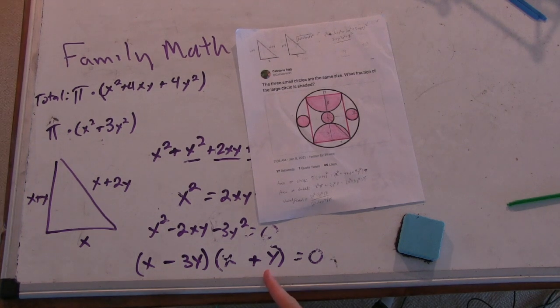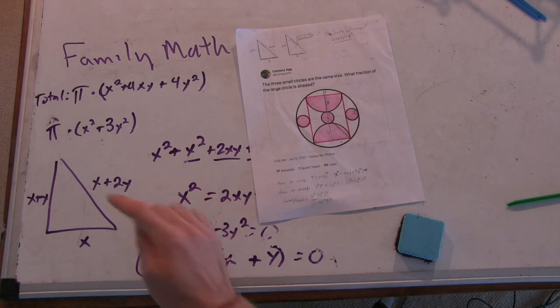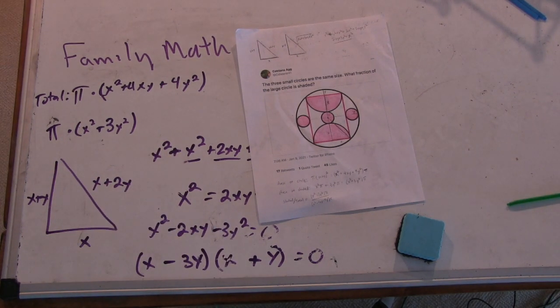Although, I guess if x equals minus y, then you would have a one, zero, minus one. That doesn't really make sense. No. Yeah, cool.